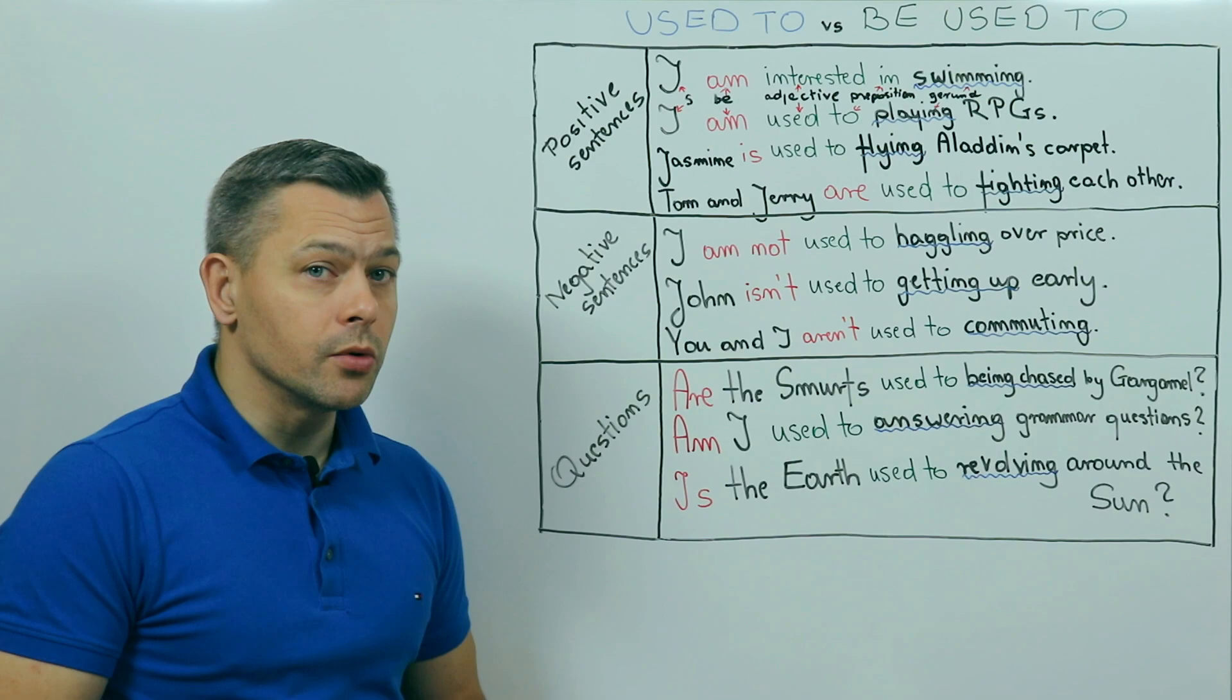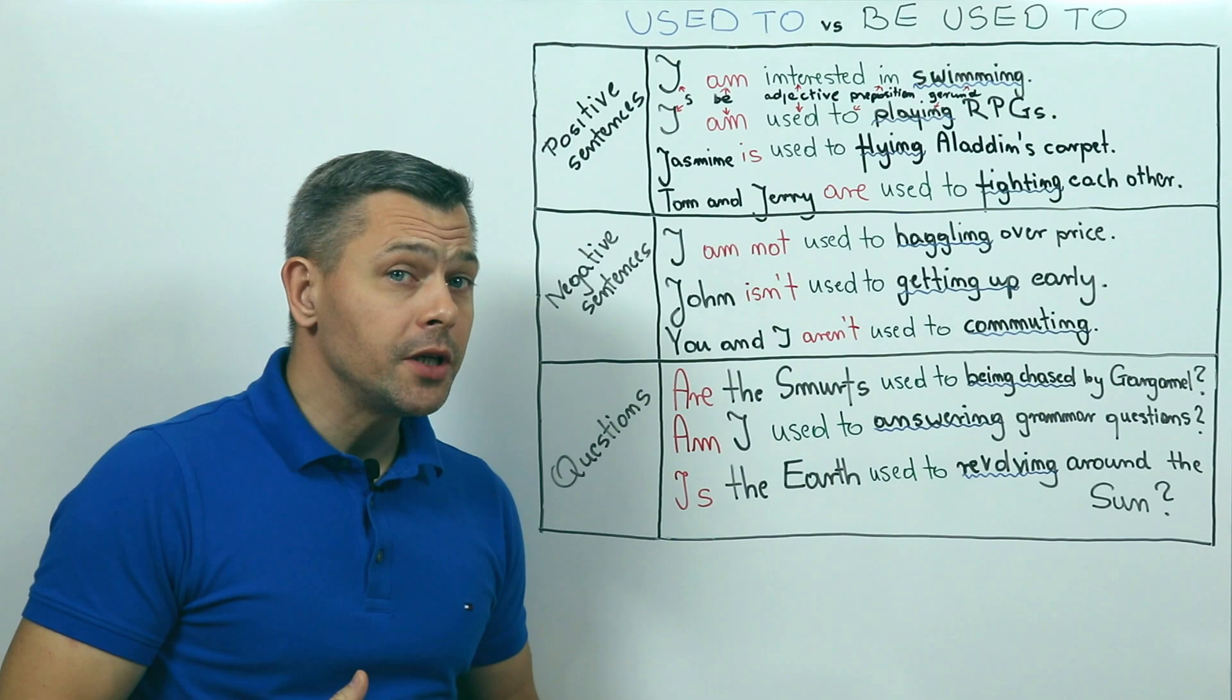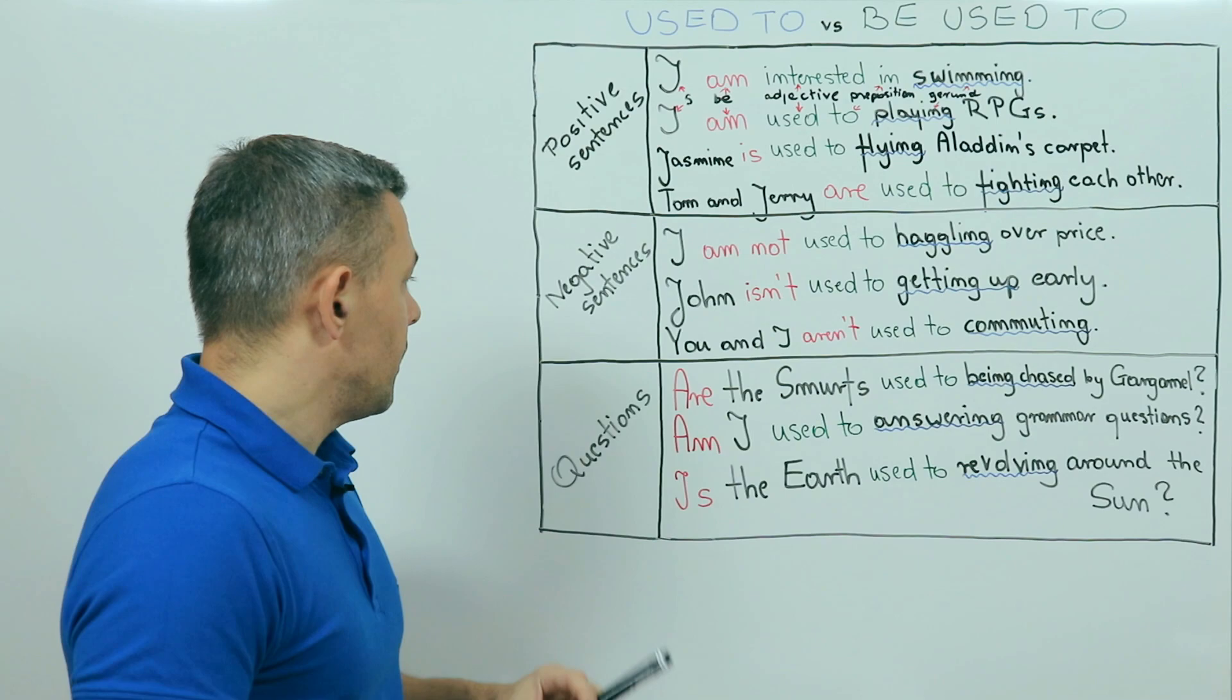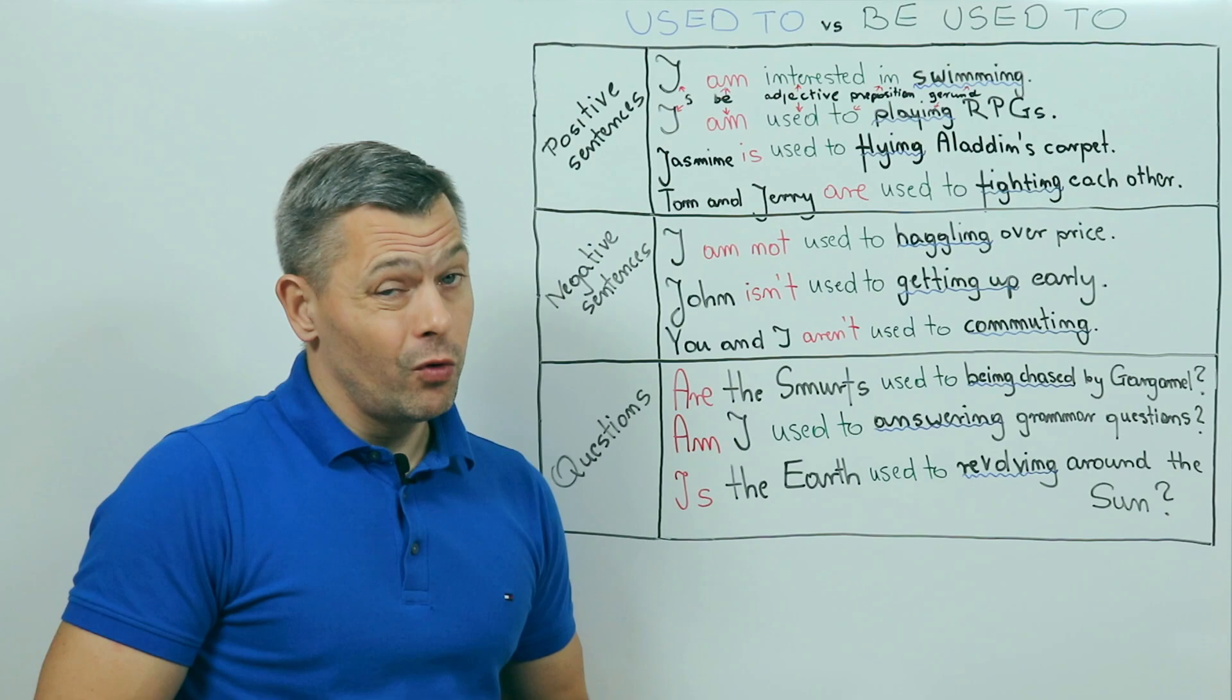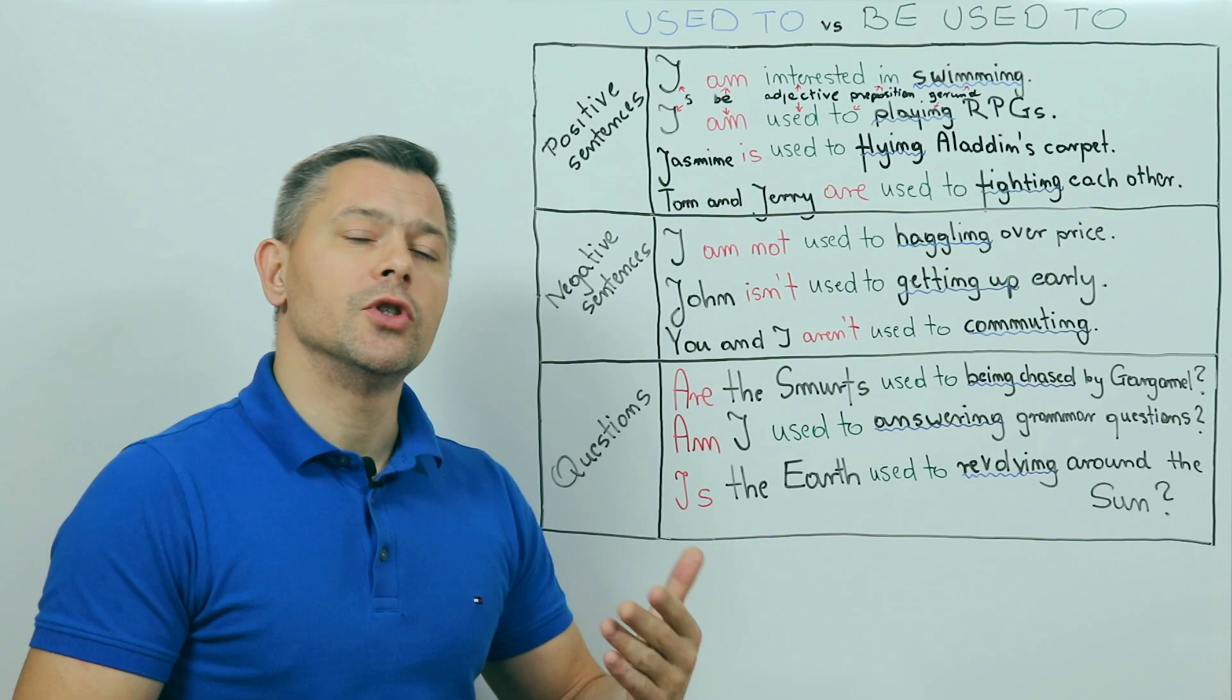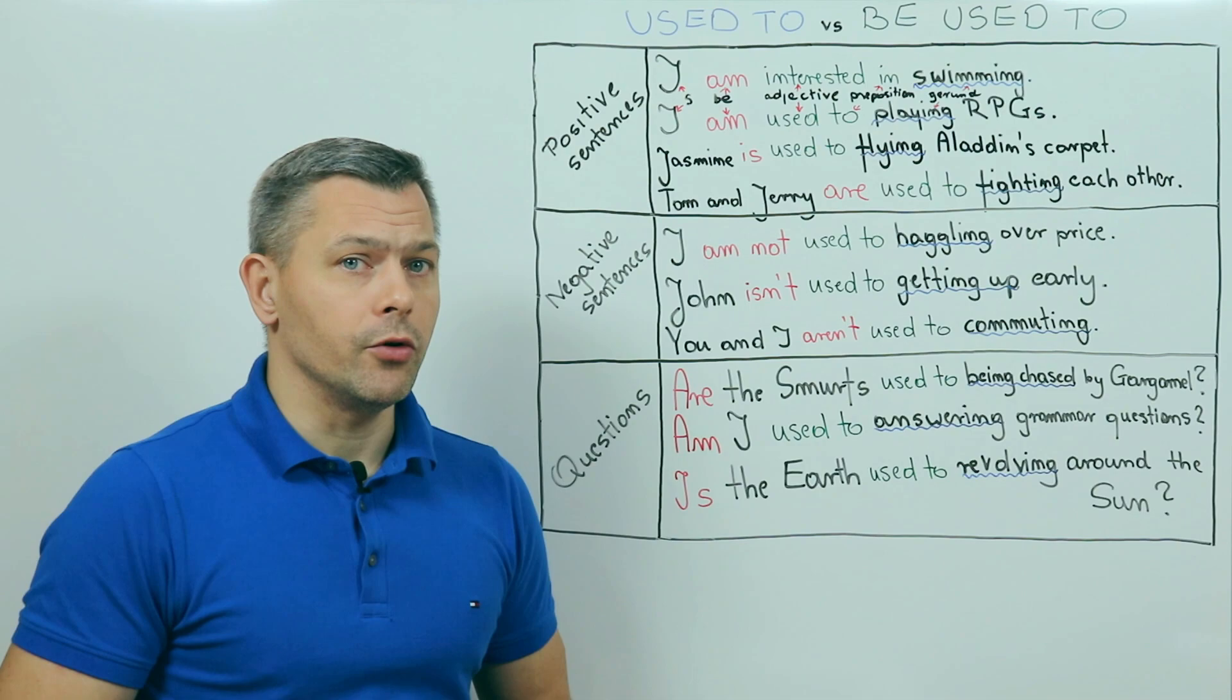And finally, how to form a be used to question. We simply place the correct form of the verb be before the subject. As simple as that. Like in this sentence, for example. Are the Smurfs used to being chased by Gargamel? Unfortunately, they are. Gargamel wants to catch the poor little things, eat them or transform them into gold. So, the Smurfs are accustomed to the wizard trying to destroy or capture them. Luckily for all of us who root on Papa Smurf and the rest of the Blues, he suffers one defeat after another.